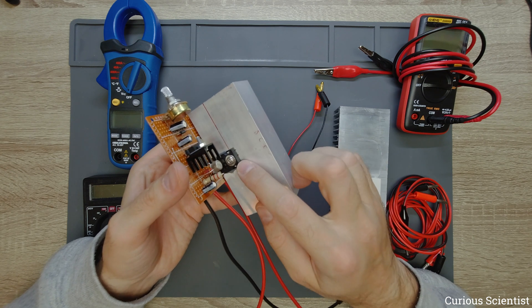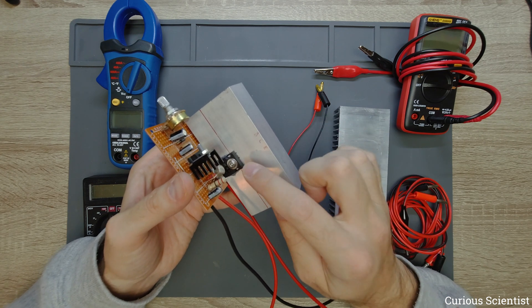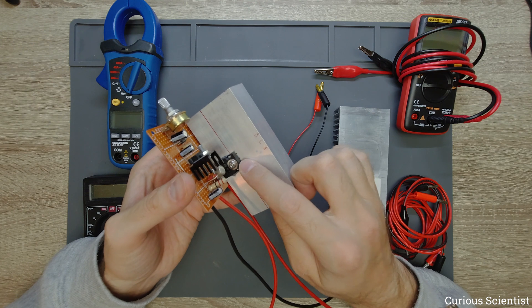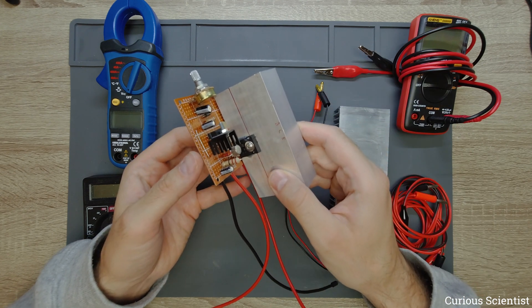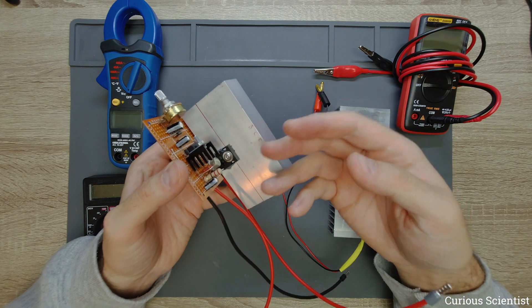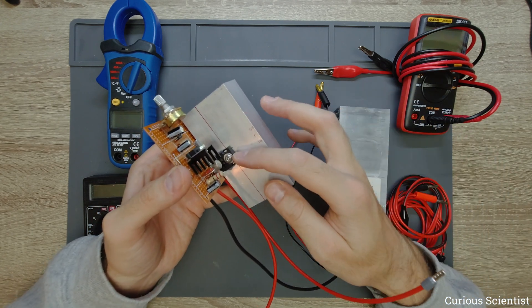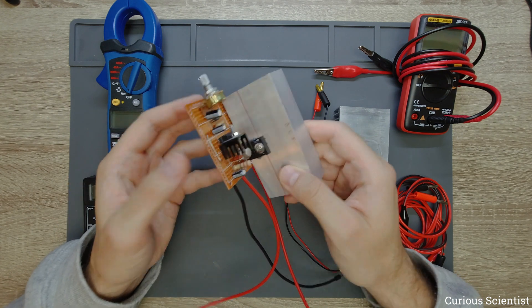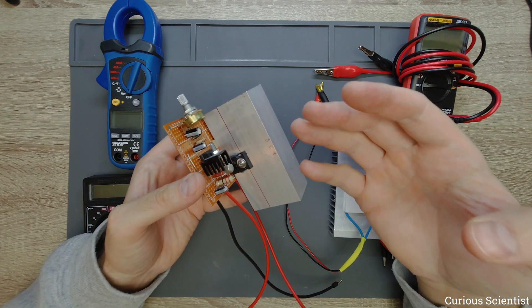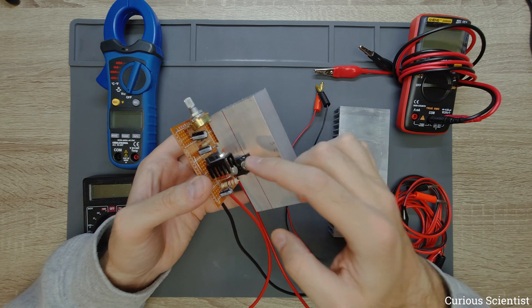What happens is the load will go through this so we will switch our required load with this transistor but in order to be able to regulate the output current or voltage or the output power then we will use the voltage regulator circuit.